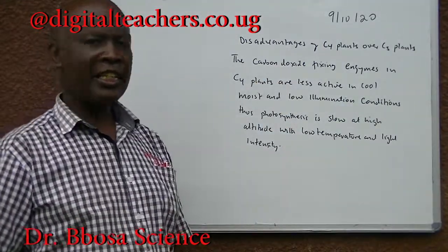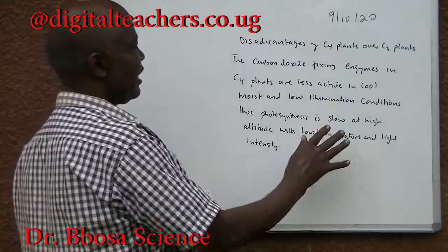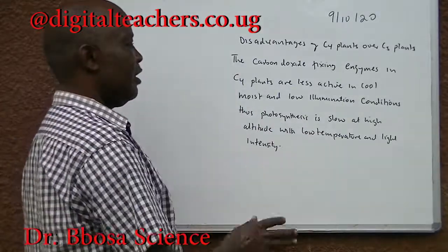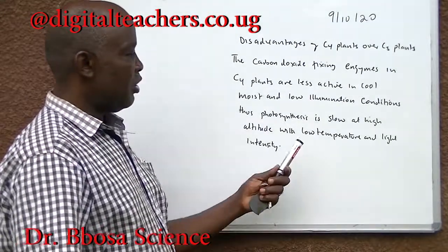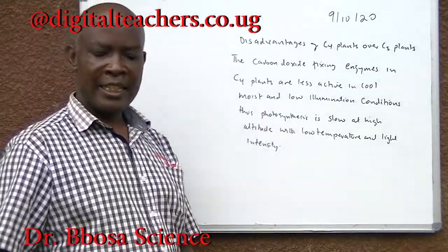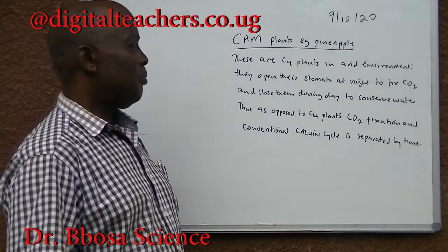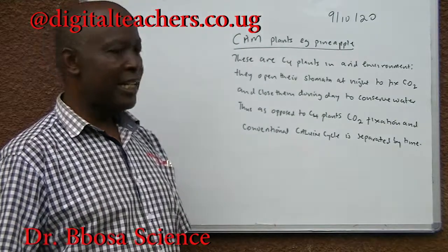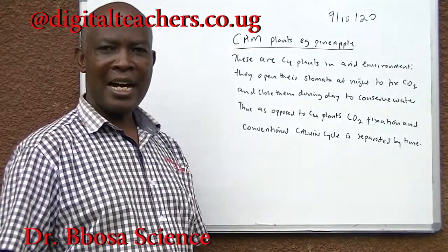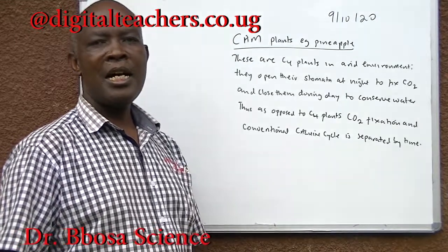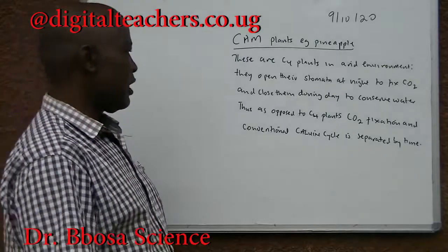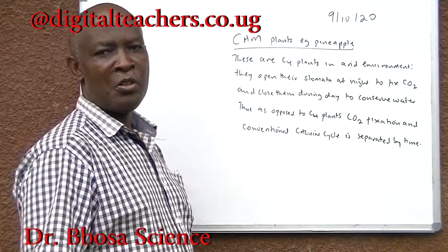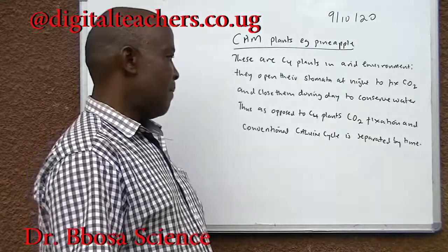Carbon dioxide fixing enzymes in C4 plants are less active in cool, moist, and low illumination conditions; thus photosynthesis is low at high altitude with low temperature and light intensity. CAM plants — for example, pineapple — are C4 plants in an arid environment. They open their stomata at night to fix carbon dioxide, and close them during the day to conserve water. As opposed to C4 plants, carbon dioxide fixation and the Calvin cycle are separated by time.